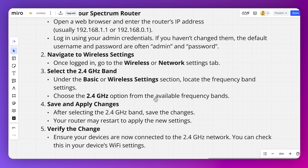After selecting the 2.4 gigahertz band, you can save the changes. Your router may restart to apply the new settings. Ensure that your devices are now connected to the 2.4 gigahertz network.